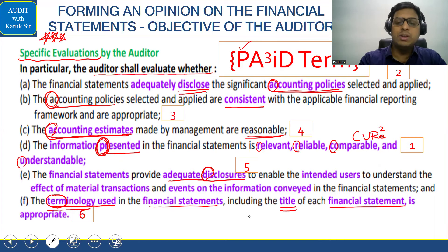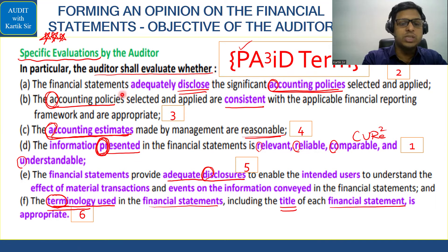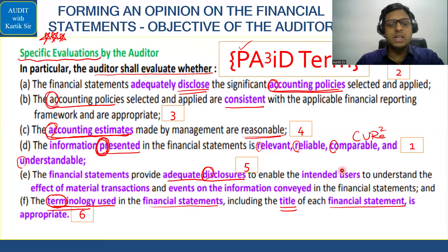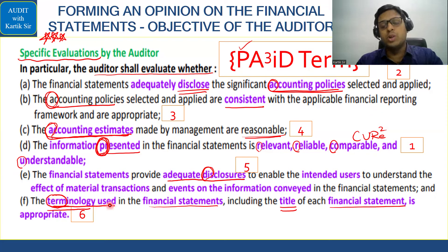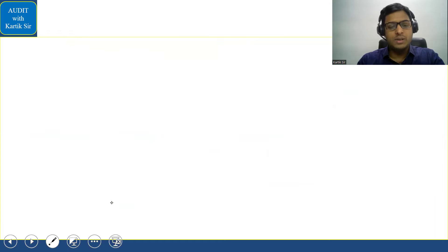The auditor will also check whether there are adequate disclosures to enable intended users to understand the effect of material transactions and events on the information conveyed. Finally, the auditor checks whether management has used proper terminology. For example, you cannot call a cash flow statement a 'cash in cash out statement' — the proper name is 'cash flow statement.' Similarly, you cannot call a balance sheet a 'list of balances statement.' That is the terminology check the auditor performs under specific evaluations in SA 700.